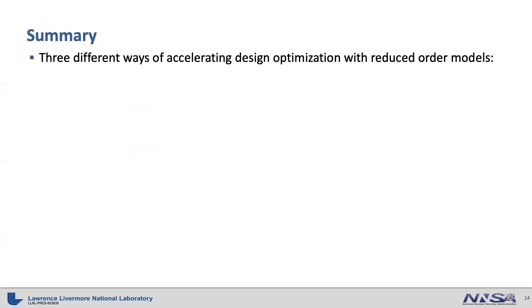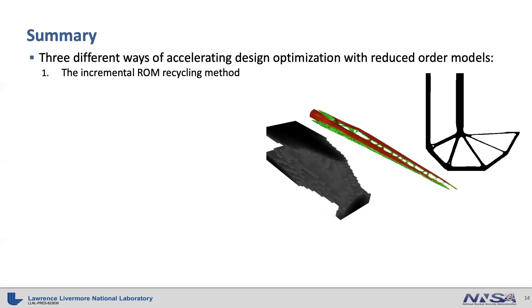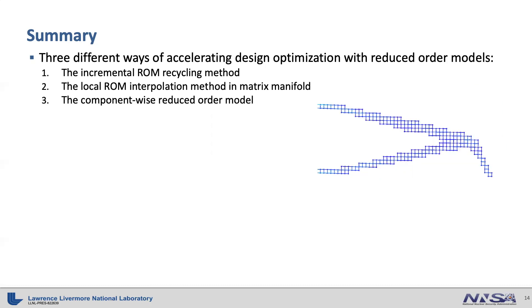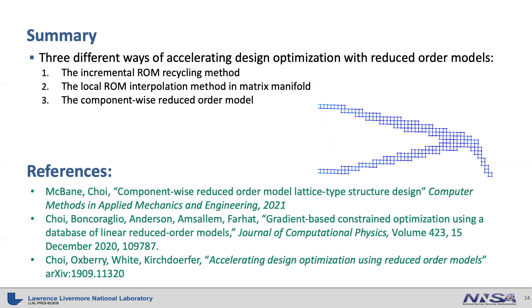This concludes my talk today. In summary, I have shown three different ways of accelerating design optimization with reduced order models. The first one was the incremental reduced order model recycling method, with which we solved various density-based topology optimization problems. The second example was the local reduced order model interpolation method in matrix manifold, with which we accelerated the shape optimization problem of the wing under flutter constraint. Finally, the third example was the component-wise reduced order model, which accelerates the lattice-type structure design process by around 1,000 times. You can find the technical details about these three methods in three research papers. If you have questions, please do not hesitate to reach out to me at my email address. Thank you for listening.